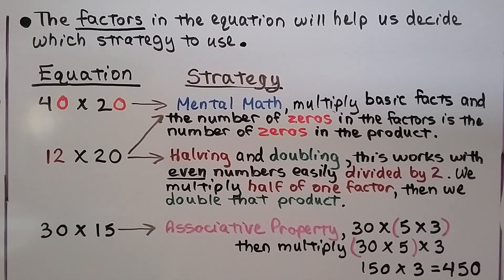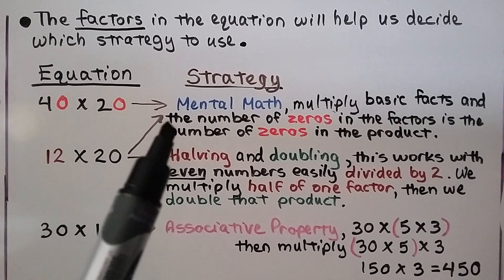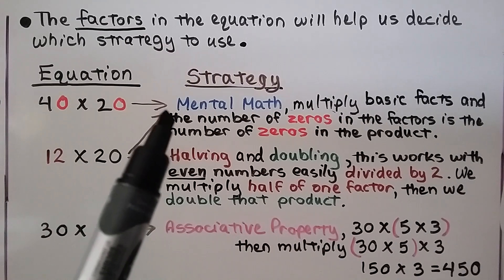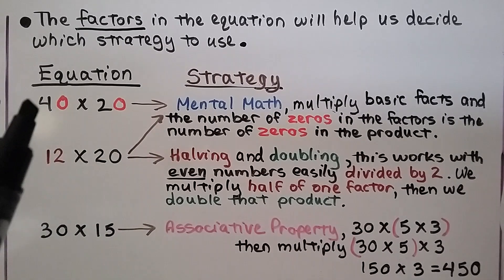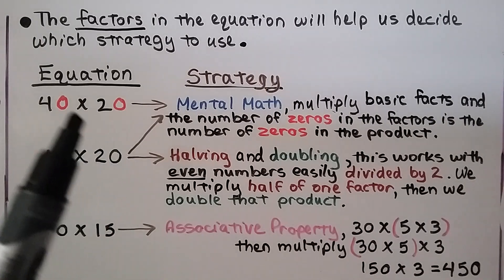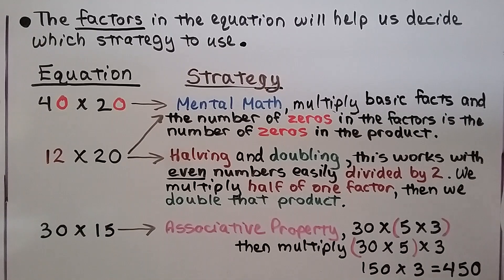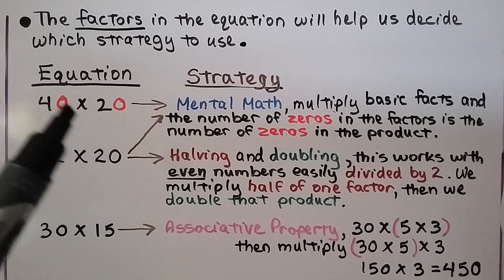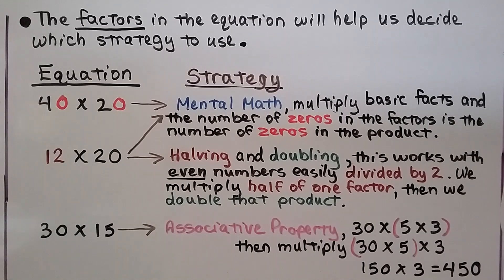The factors in the equation will help us decide which strategy to use. For an equation like 40 times 20, we can use mental math and multiply basic facts: 2 times 4 equals 8. The number of zeros in the factors is the number of zeros in the product. We have 2 zeros, so we'd have an 8 with 2 zeros — that would be 800.